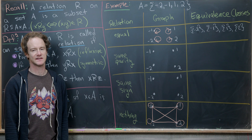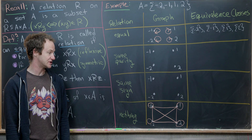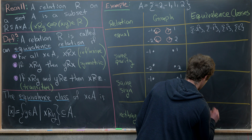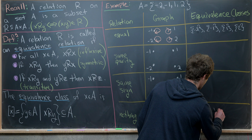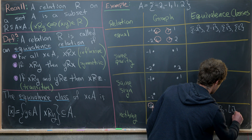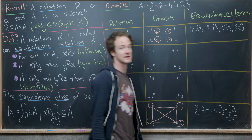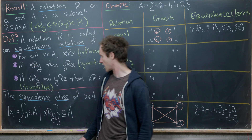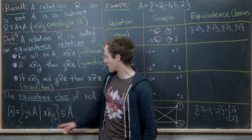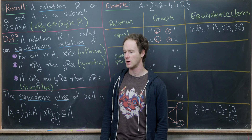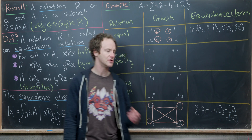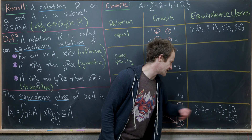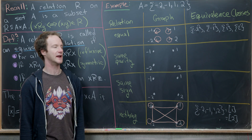What about the equivalence classes in this case? Since everything is related to each other, we only have one equivalence class, and that's the whole set: negative one, negative two, one, and two. That will be the equivalence class of one, of two, or of any element from the set. The element x we build the equivalence class from is sometimes called the equivalence class representative. We may have more than one representative for the same equivalence class.